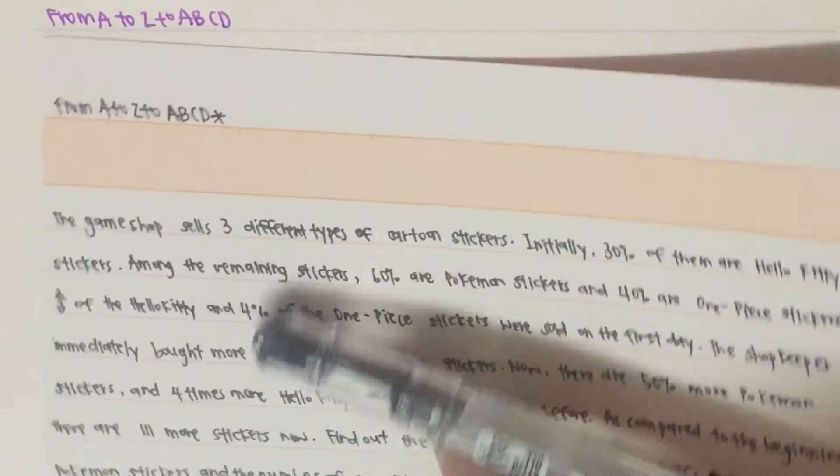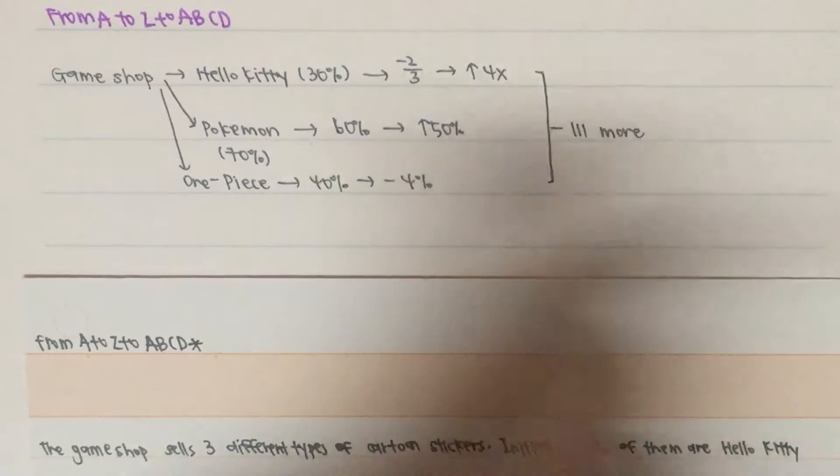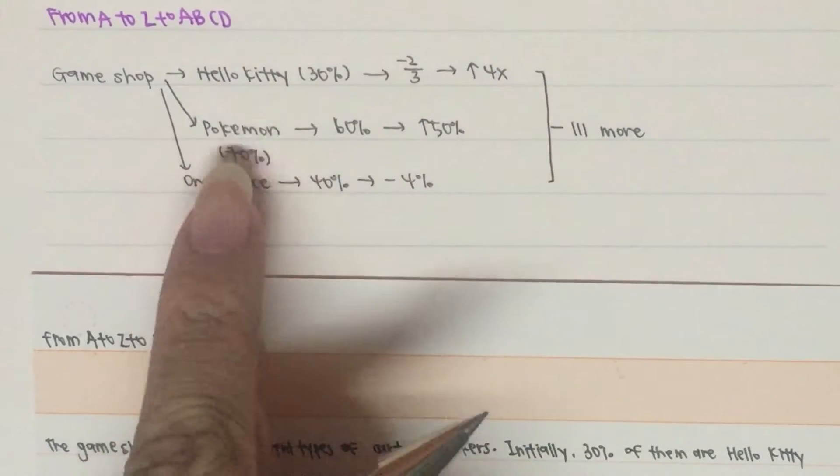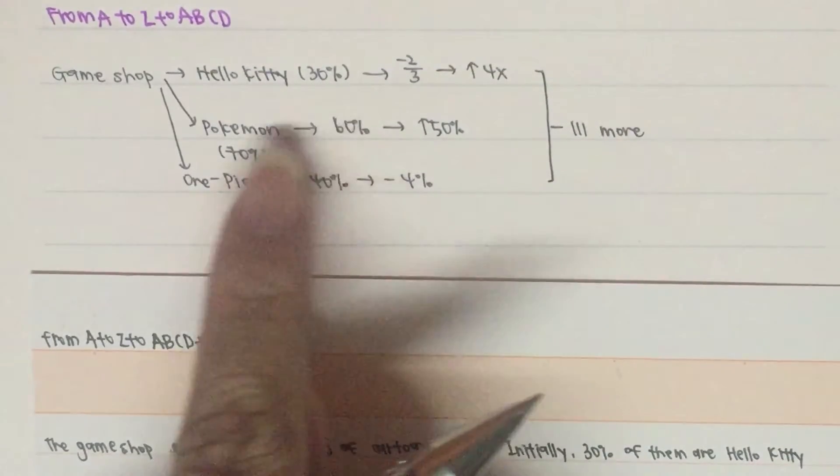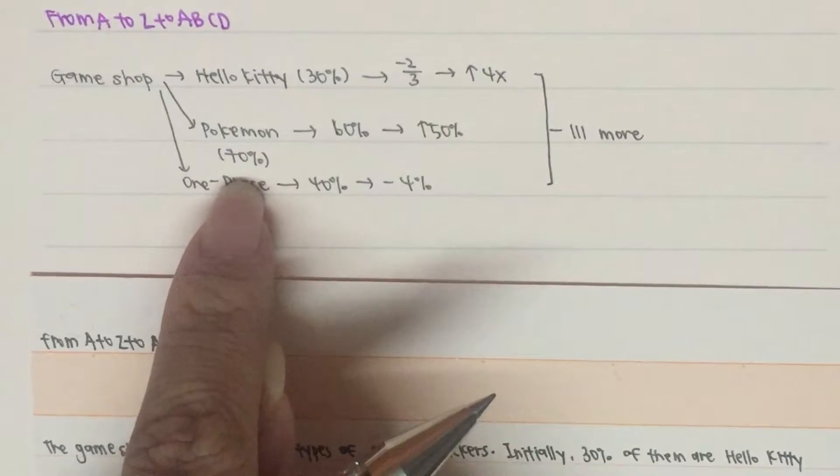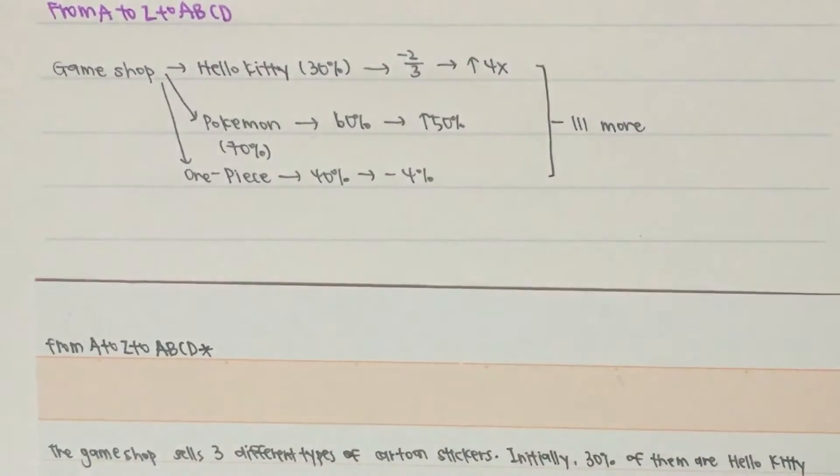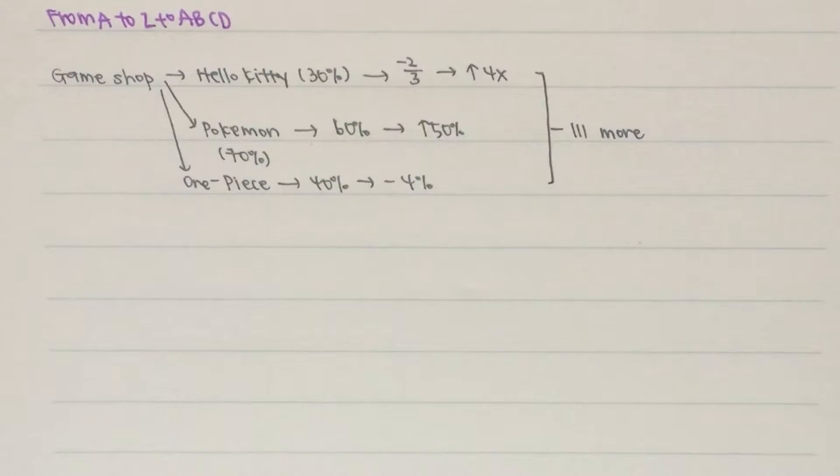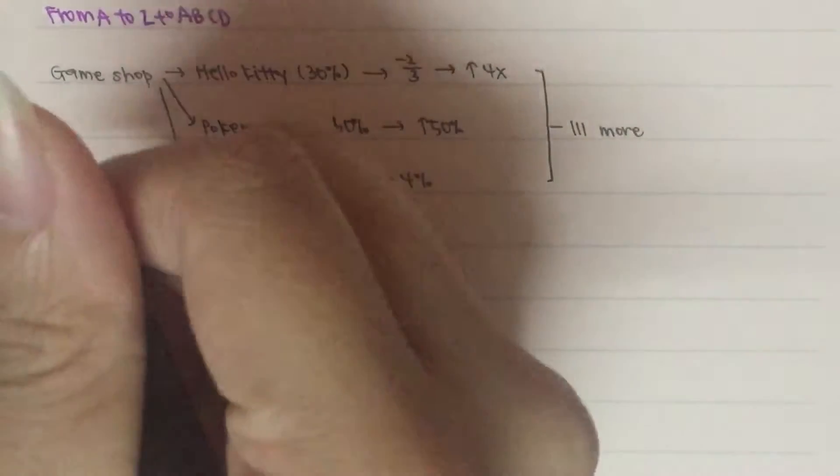So for this question, we are going to draw a similar diagram as question 1. The GameShop has 30% Hello Kitty Stickers, which will then be sold in total and then they will increase 4 times. Then for the remaining 70%, it will be Pokemon and One Piece Stickers. The Pokemon Stickers will be 60% of the 70% and the One Piece will be the remaining 40% of the 70%. For Pokemon Stickers, there is an increase of 50% later on. For One Piece, there will be minus off of 4% which is sold. And there is 111 more now. So we are going to use the same concept as we did in question 1. We will start calculating from Pokemon because it is the easiest.